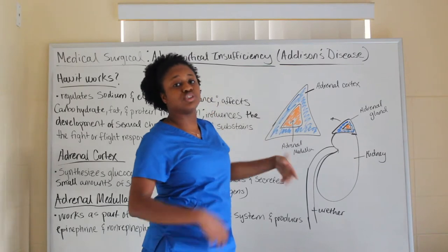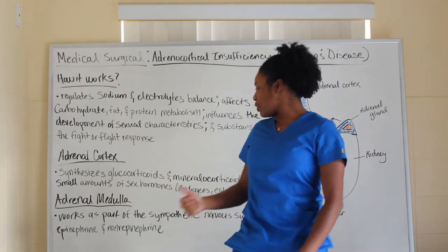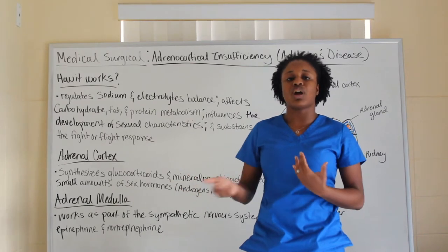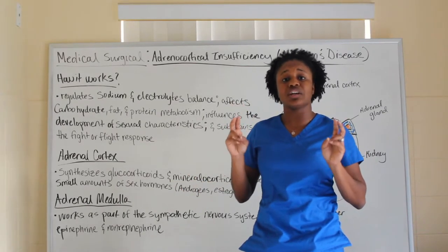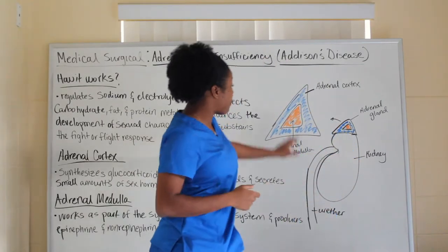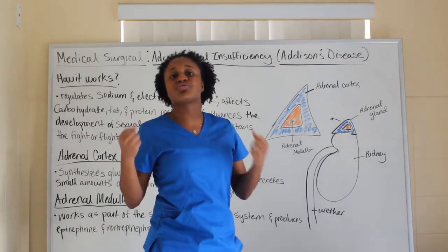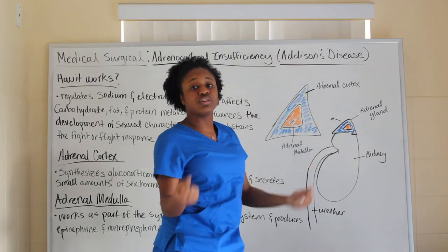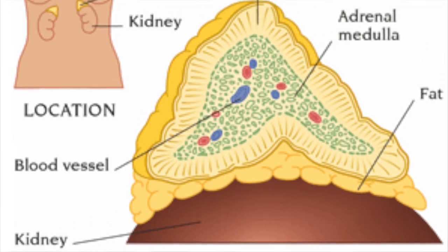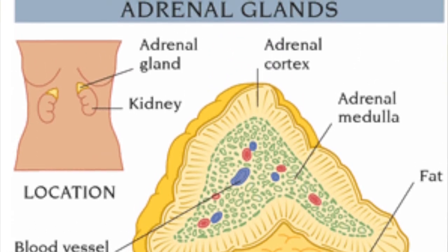The inner layer is the adrenal medulla, which works as part of the sympathetic nervous system and helps to produce epinephrine and norepinephrine — that's where you get your fight-or-flight response. So the medulla produces your adrenaline, and the other functions happen in the cortex. Together they make up the adrenal gland, which sits on top of each kidney.